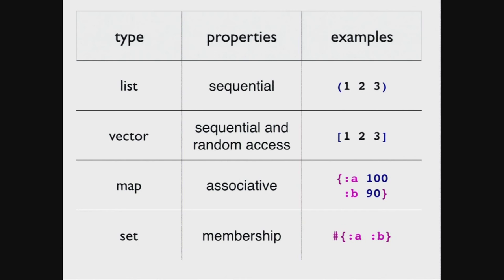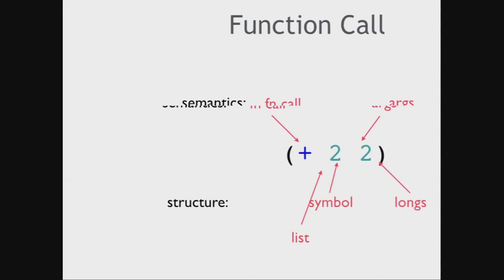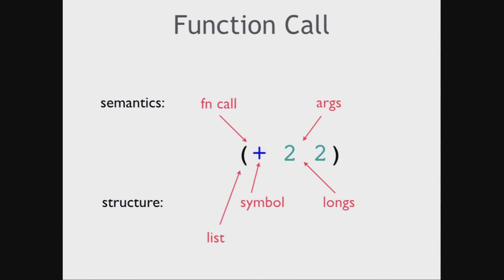Now you know Clojure — that wasn't so bad. There aren't any semicolons, and there aren't any commas, though you can put commas in if you want — they're whitespace. The only other thing you need to know to run Clojure programs is that lists are special. The evaluation rule for a list is: take the first thing in the list and treat that as some operation to perform, and treat the other things as its arguments. The evaluation rule for symbols is: look up the code or data associated with this. So this is actually a program that says add 2 plus 2.